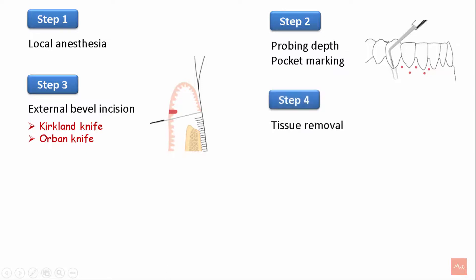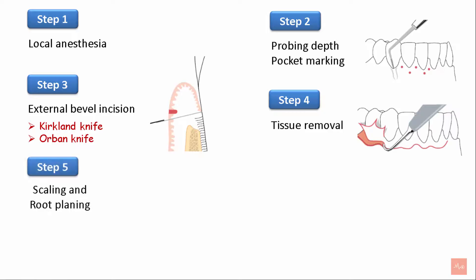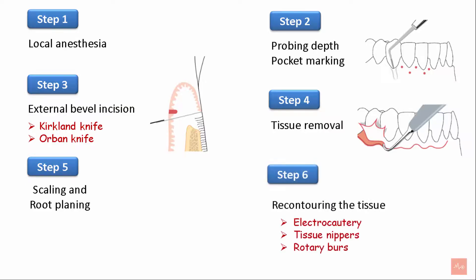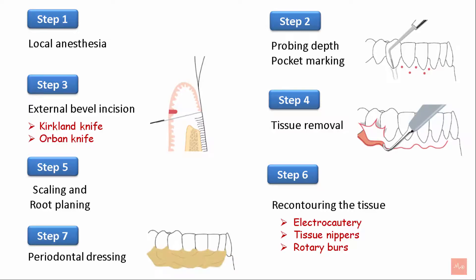Step 4 involves tissue removal with the use of a scaler or curette. Step 5 involves scaling and root planing to remove any calculus present underneath the gingival tissue. Step 6 involves recontouring the tissue using electrocautery tips, tissue nippers, and rotary burrs. The final step involves placement of a periodontal dressing to protect the raw wound.